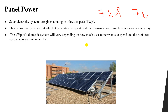The kilowatt-peak of a domestic system will vary depending on how much a customer wants to spend and the area of the roof available. Usually we are limited to the area of the roof. If you are installing PV panels for your own house, you are constrained by the roof area. Depending on this available space, you will install PV panels and may reduce your electricity bill.